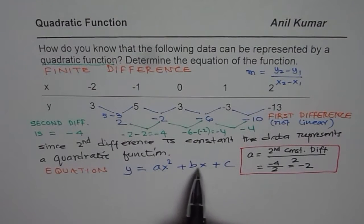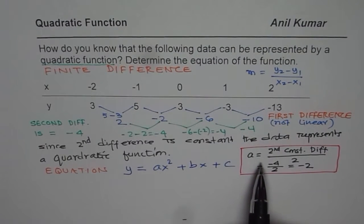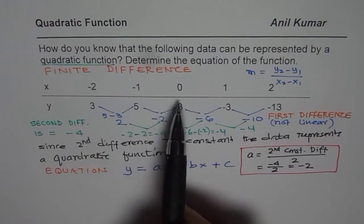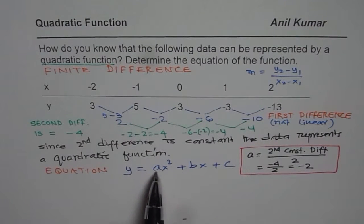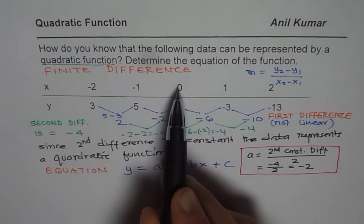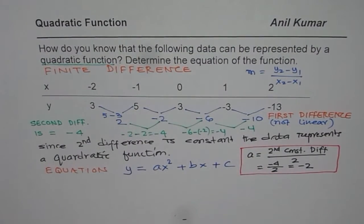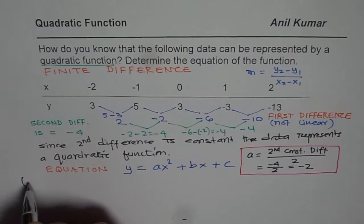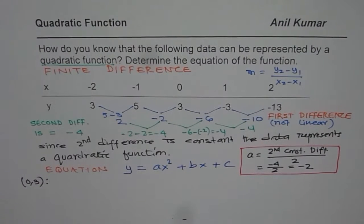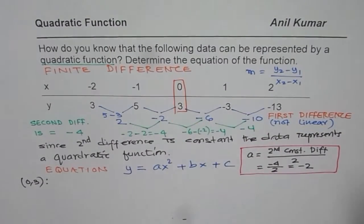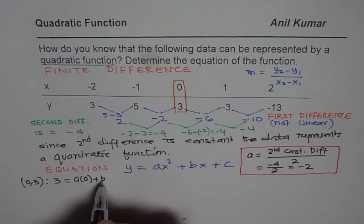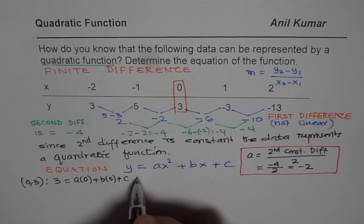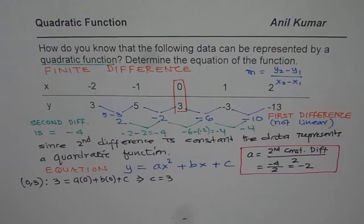That leaves us with two parameters to find, b and c. Those who do not know the formula need to take three different points and solve for a, b, and c. We will consider three points: (0, 3), (minus 1, 5), and (1, minus 3). If we write x equals 0 and y equals 3, we get 3 equals a times 0 plus b times 0 plus c, which means c equals 3. So we straight away get the value of c.